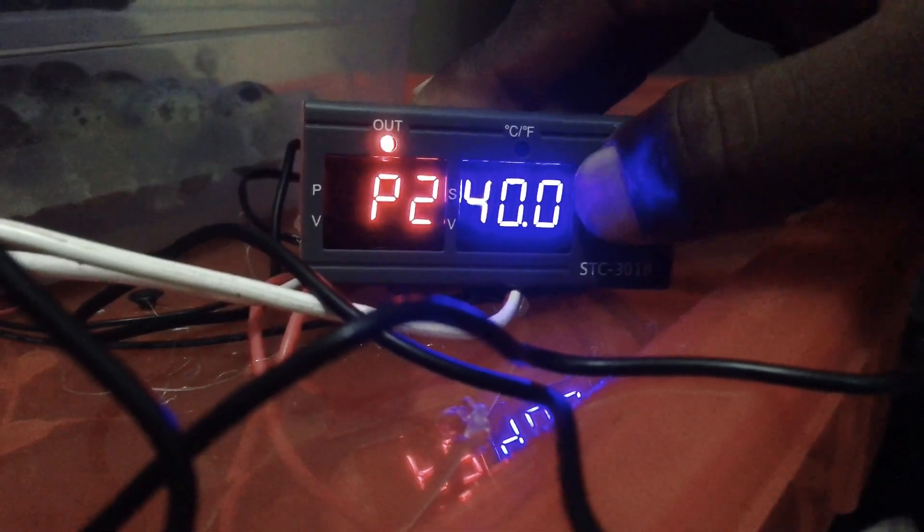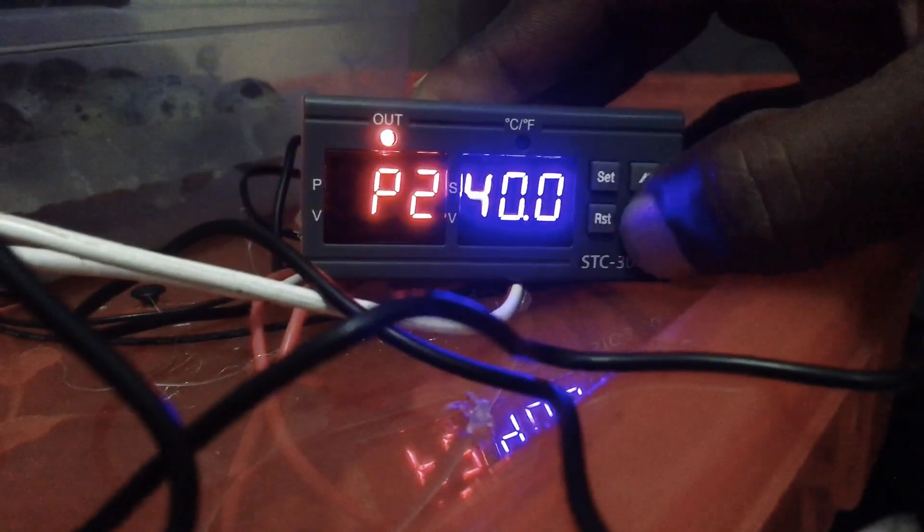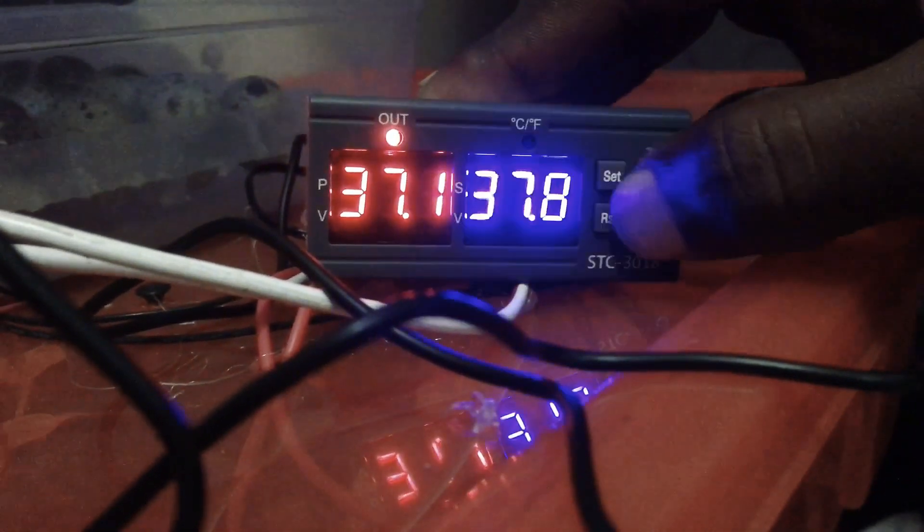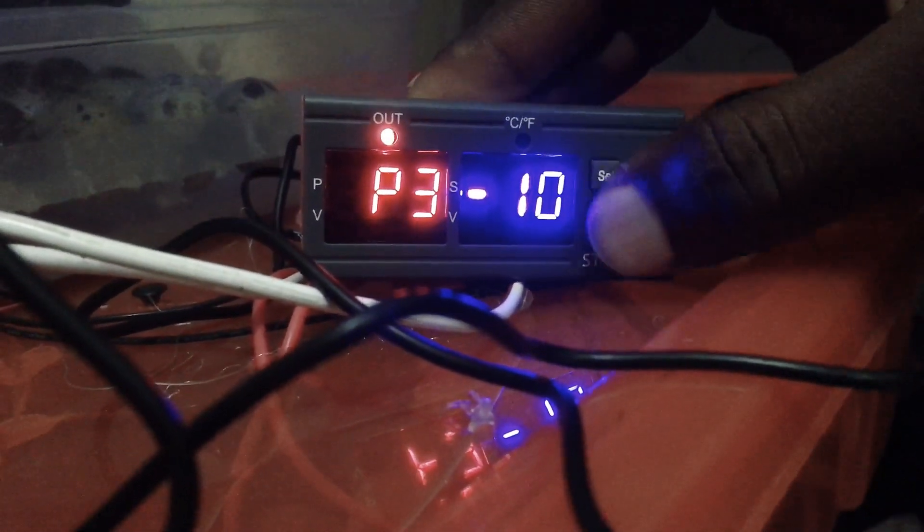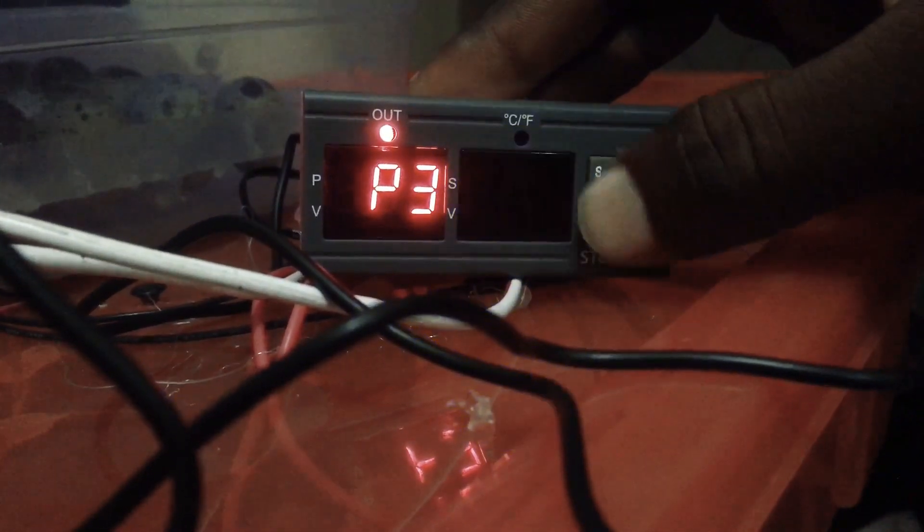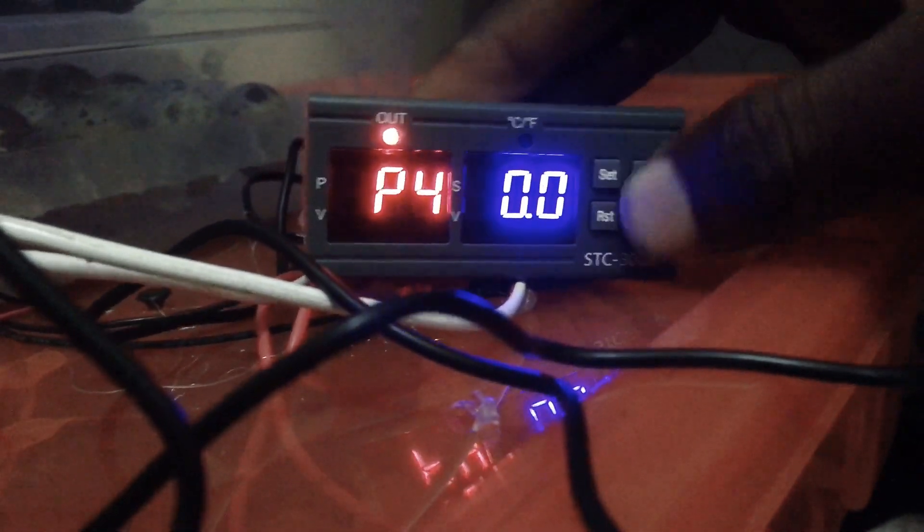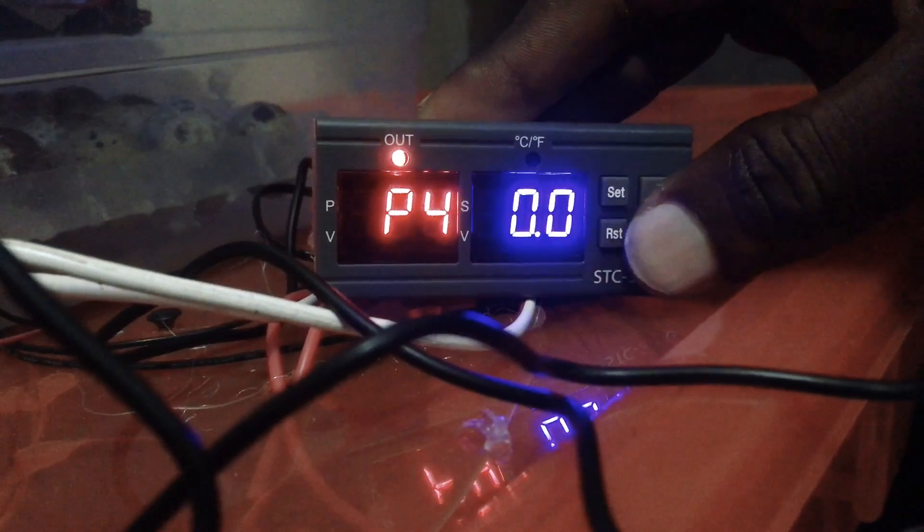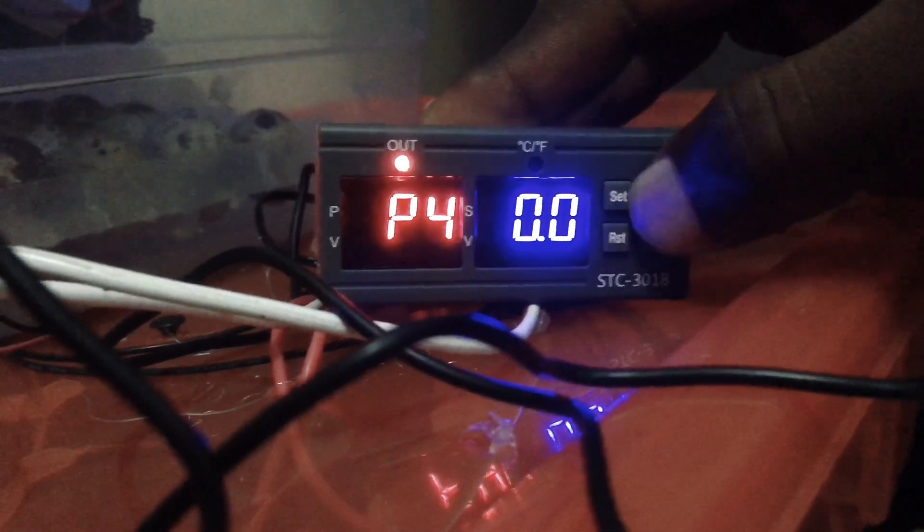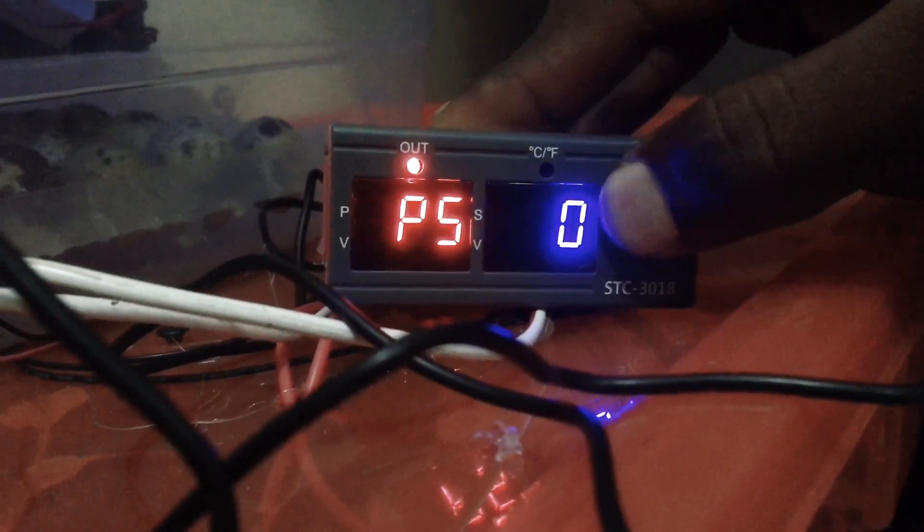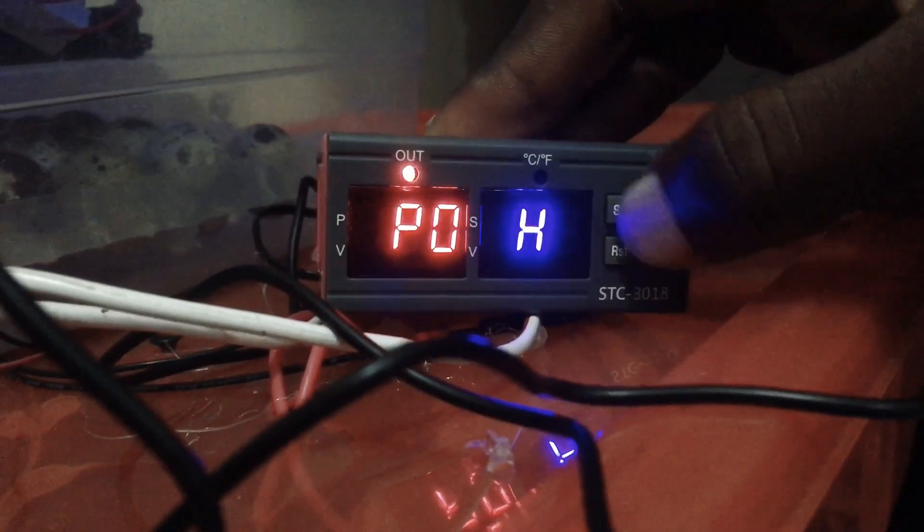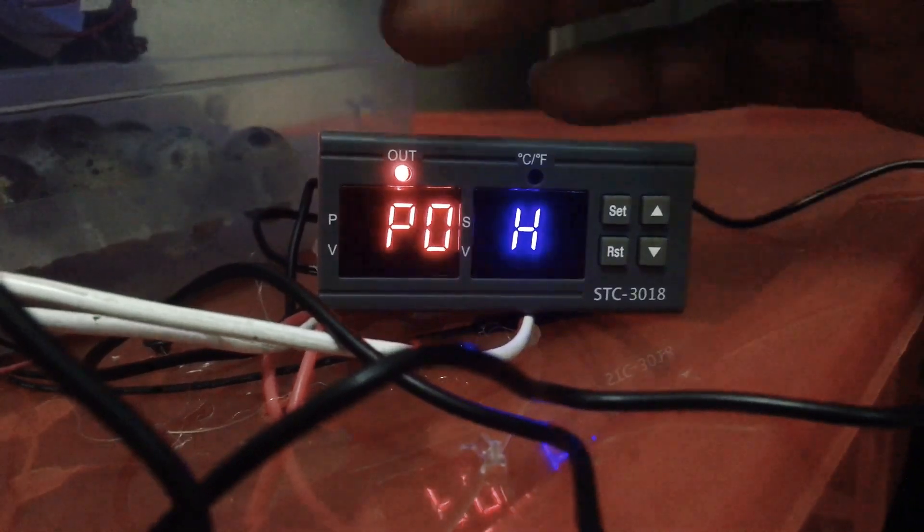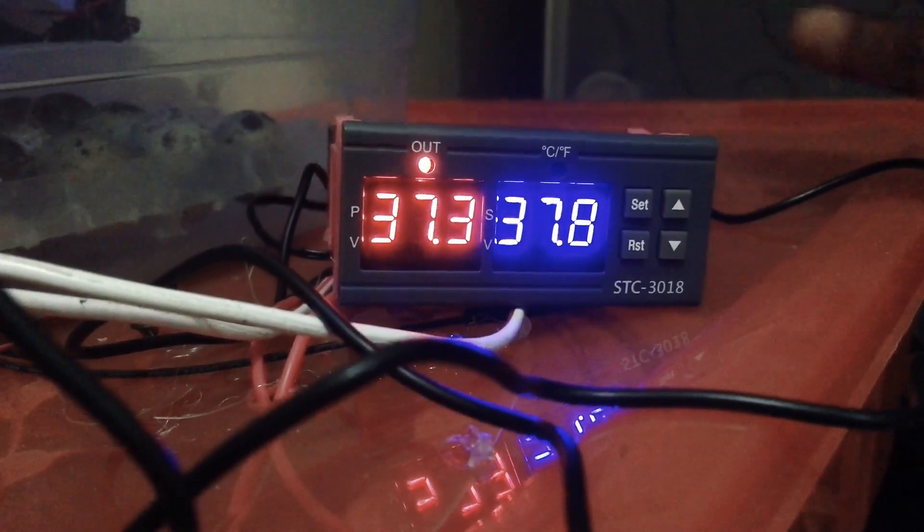So P2 should be 40.0. You press set again for P3. P3 should be minus 10. Press set again, you move it. P4 should be 0, P5 should be 0, P6 should be C. Then you come back to P0 and that's it. You leave it then it goes back to its side.